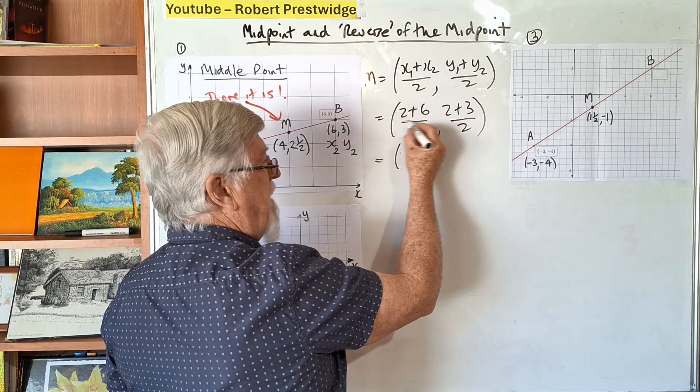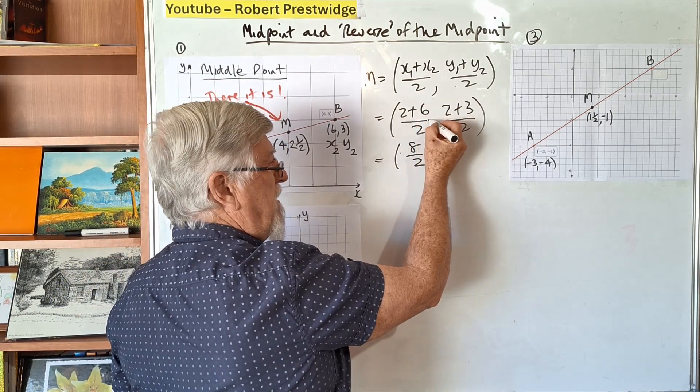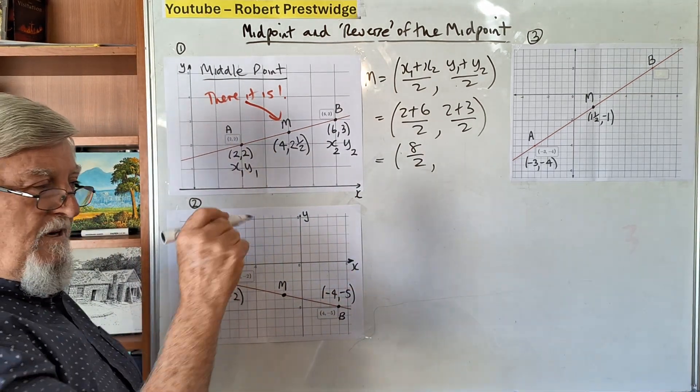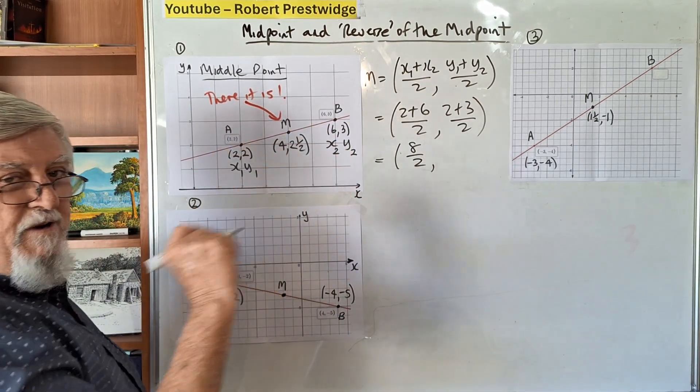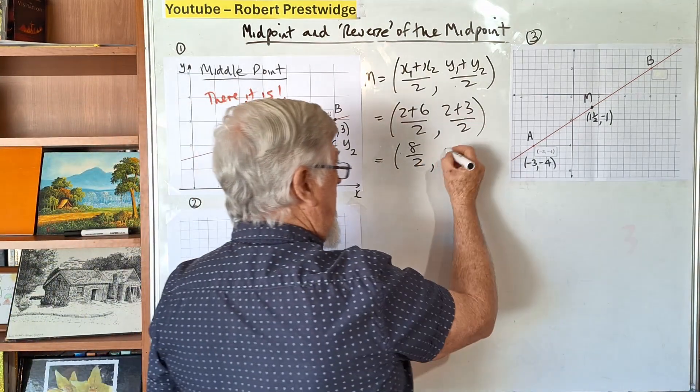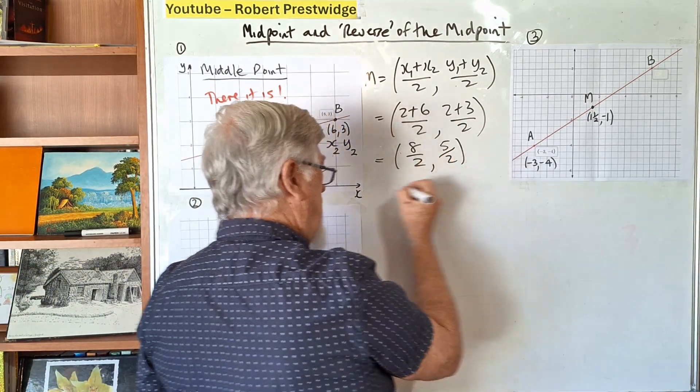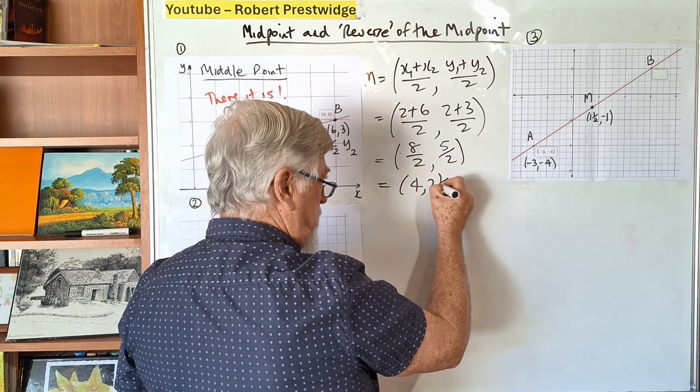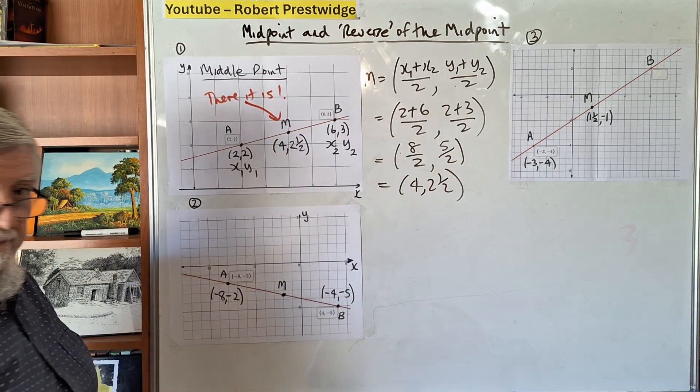Just remember, a fraction bar means there's a bracket around the top. Most things in math refer to brackets, like square roots. So we've got 8 over 2 and 5 over 2, which is 4 and 2.5. There's the first question, nice and easy.